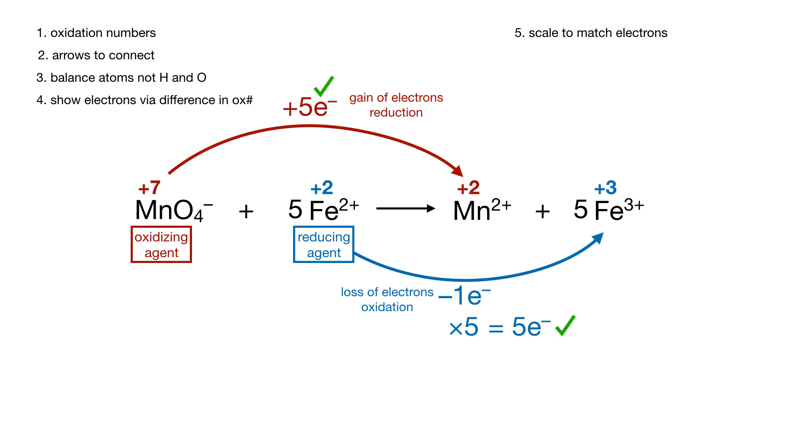Everything's balanced except for waters and hydrogen ions. So now we're going to balance oxygens with waters. There's 4 oxygens on the left in that permanganate, so we're going to add 4 waters on the right. That balances the oxygens.